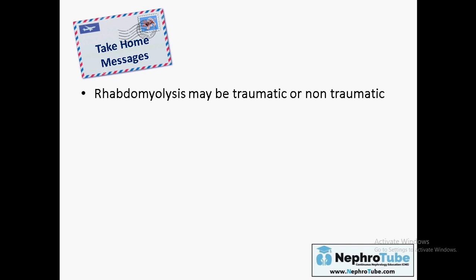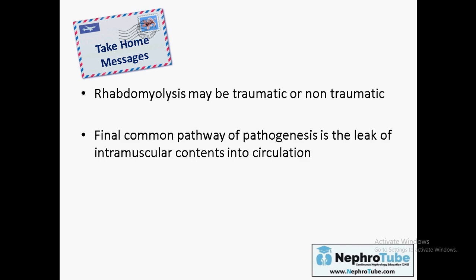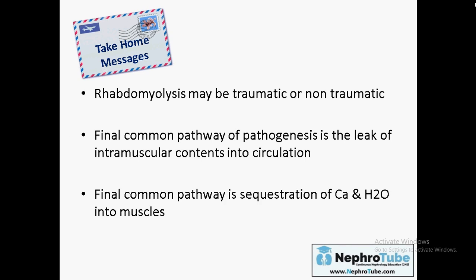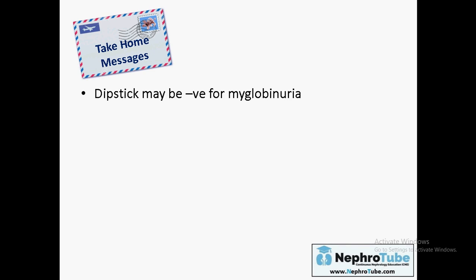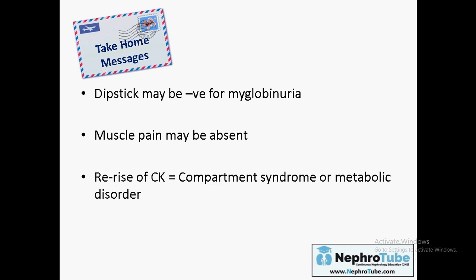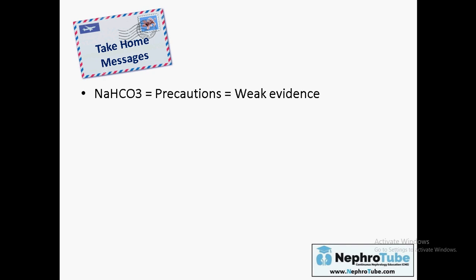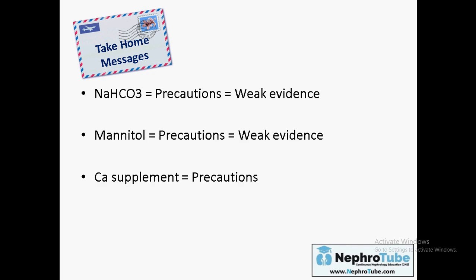Home messages: Rhabdomyolysis may be traumatic or non-traumatic; the final common pathway is leak of intramuscular contents into circulation and sequestration of calcium and water in muscles. The hallmark of AKI is acute tubular necrosis. Dipstick may be negative for myoglobinuria; muscle pain may be absent in about 50 percent. Failure of CK to decline raises suspicion of compartmental syndrome or metabolic disorders. Cornerstone management is hydration, especially isotonic saline. Sodium bicarbonate and mannitol have weak evidence and need precautions. Calcium supplements need caution to avoid rebound hypercalcemia. Prognosis is generally good.